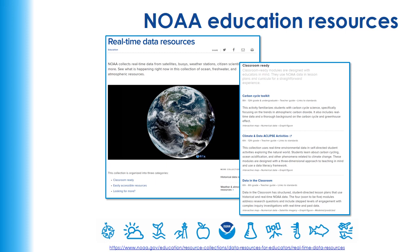The data collections are organized by the headers: classroom ready, easily accessible resources, and looking for more. Classroom ready resources are lessons using NOAA data that are ready to go — you don't have to do anything extra to get started. Easily accessible resources are data sources themselves that don't require too many clicks or too much work to understand. The Looking for More section includes data that is a bit complicated, requires many clicks, or may be very raw and technical, but are really interesting and useful.